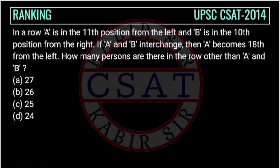Let's see this question from the ranking topic asked by UPSC in their CSAT paper of 2019. In a row, A is in the 11th position from the left and B is in the 10th position from the right.